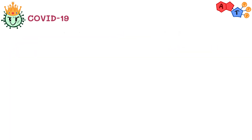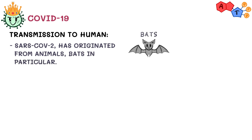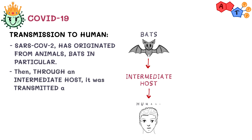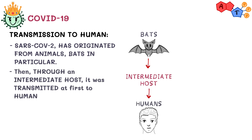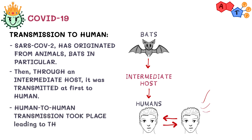It's believed that SARS-CoV-2, the causative virus of COVID-19, originated from animals — bats in particular — due to genetic similarities. Then through an intermediate host, it was first transmitted to humans, after which human-to-human transmission took place, leading to this pandemic.